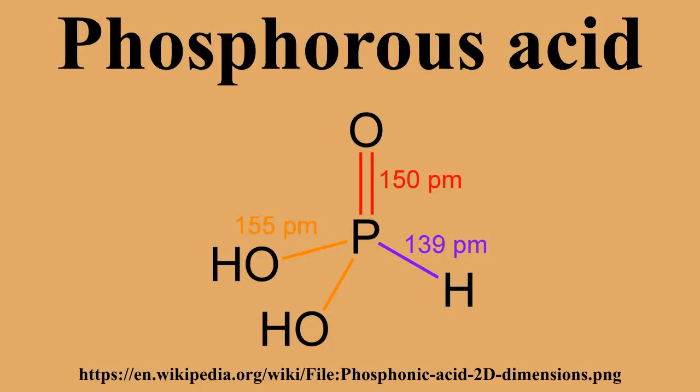The conjugate base H2PO3⁻ is called hydrogen phosphonate, and the second conjugate base HPO3²⁻ is the phosphonate ion. The hydrogen bonded directly to the phosphorus atom is not readily ionizable. Chemistry examinations often test students' appreciation of the fact that not all three hydrogen atoms are acidic under aqueous conditions.